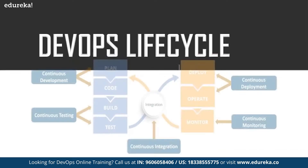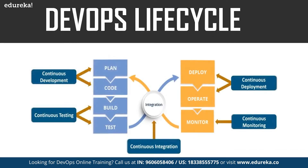As you can see in this diagram, these are the various phases of the DevOps lifecycle: continuous development, continuous testing, continuous integration, continuous deployment, and continuous monitoring. Now let us look at each of these phases one by one.